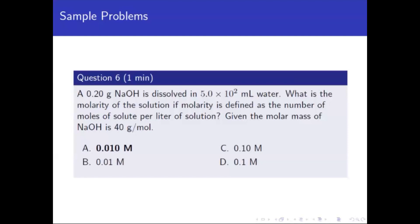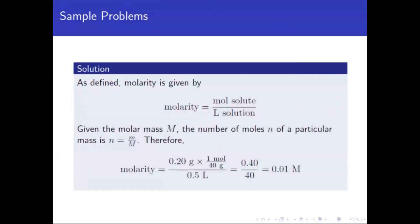And then we need liters of solution. So we're given 5.0 times 10 squared mL. So we need to convert mL into liters. That's 500 mL. So in terms of liter, that is 0.5 liter.